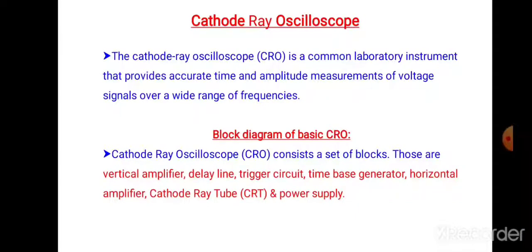Using this instrument, we can measure the time and amplitude accurate values for the voltage signals. Why we are using the cathode ray oscilloscope at laboratory level? Because of its reliability, stability, and ease of operation. For this reason, we are using it as a general purpose laboratory instrument.